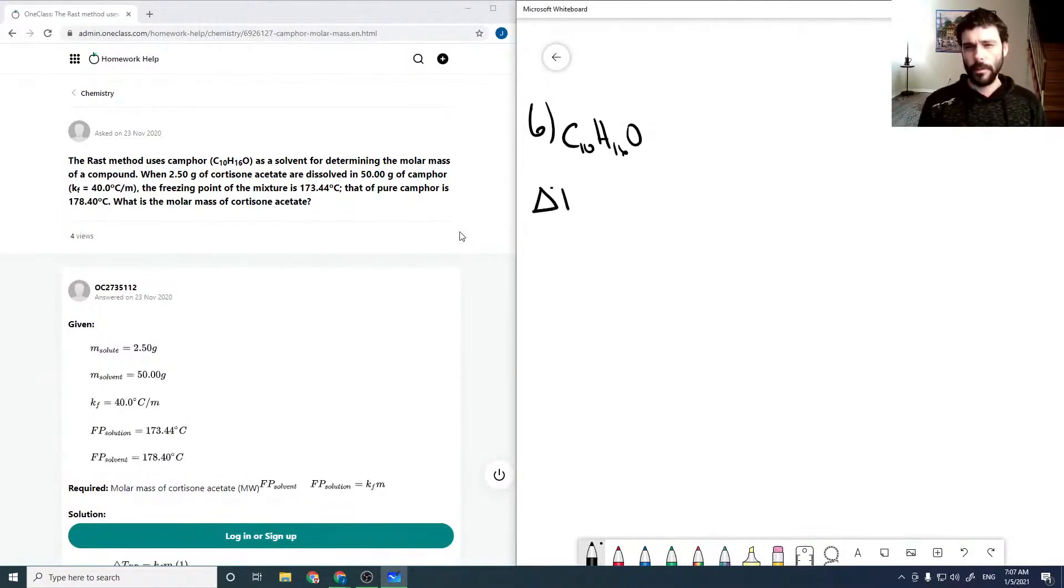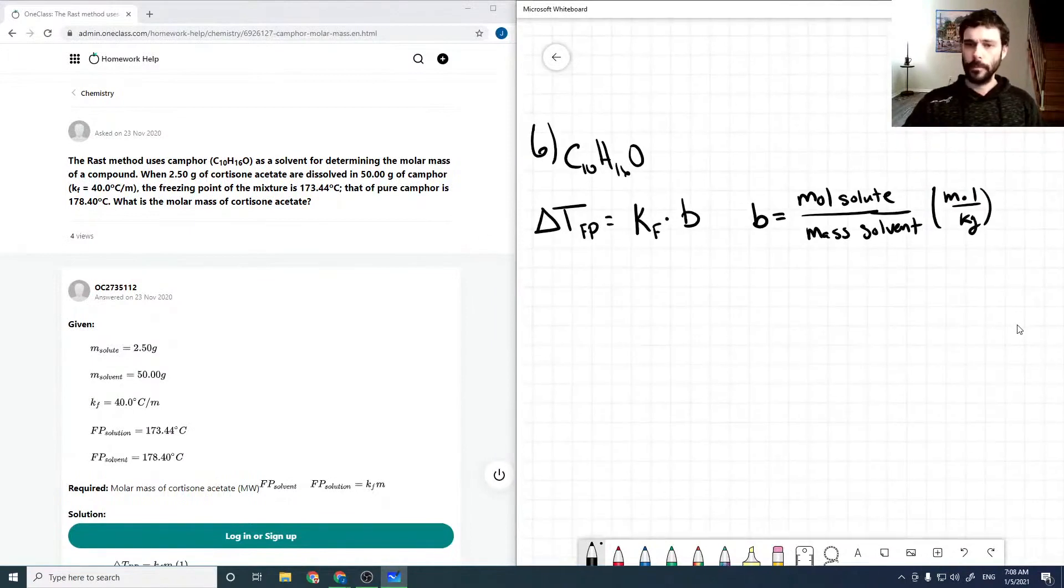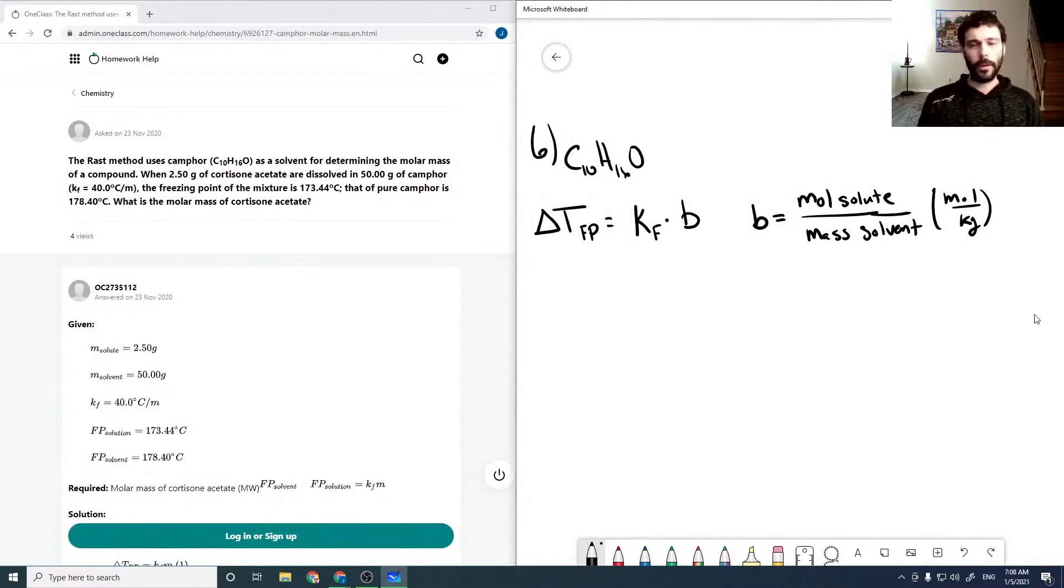So our freezing point depression equation is just our freezing point depression constant, Kf, times our molality of our solute, where our molality is in moles of solute over mass of solvent. So that's important. This is in moles per kilogram, so typically expressed in moles per kilogram. So that would be the M here.